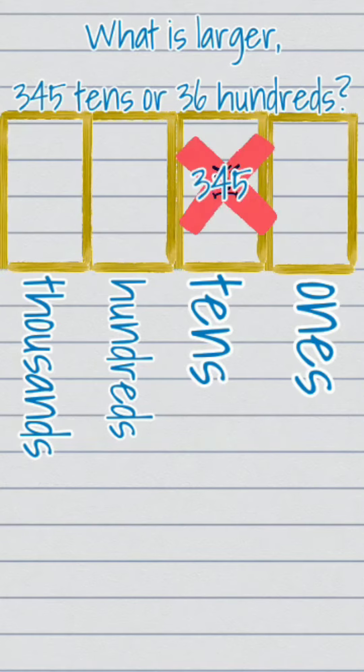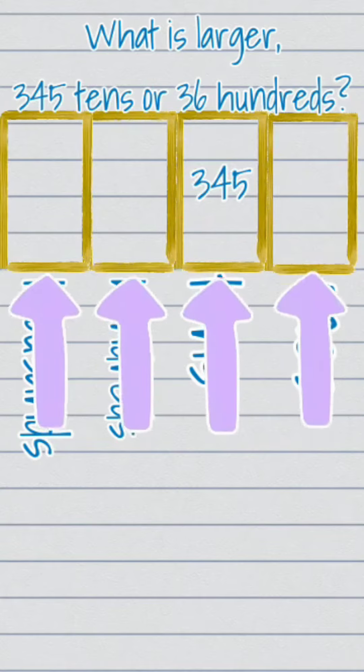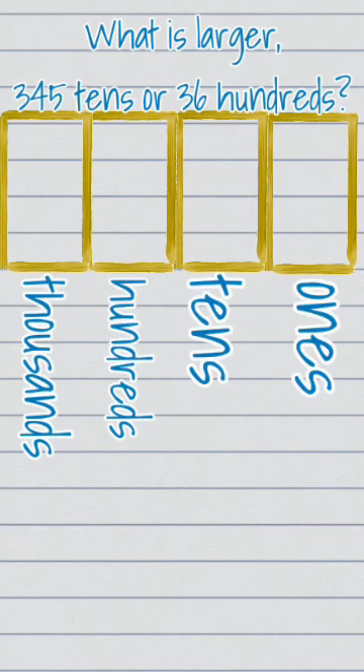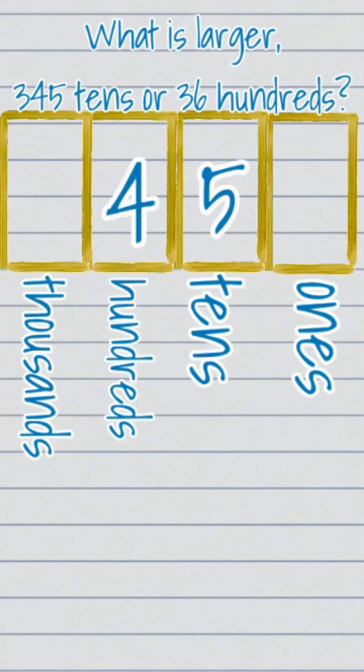Of course not, only one digit can go in each place value, so what do you do? The 5 can stay in the tens place. The 4 will need to move over into the hundreds place, and the digit 3 will need to be in the thousands place.